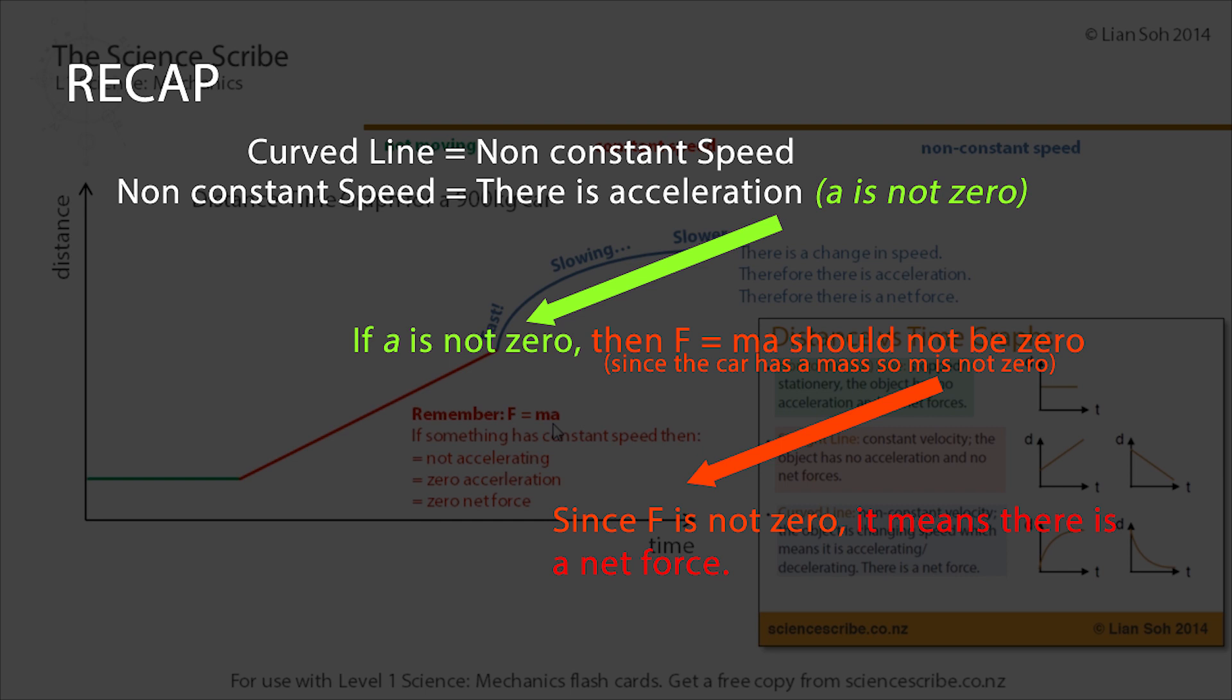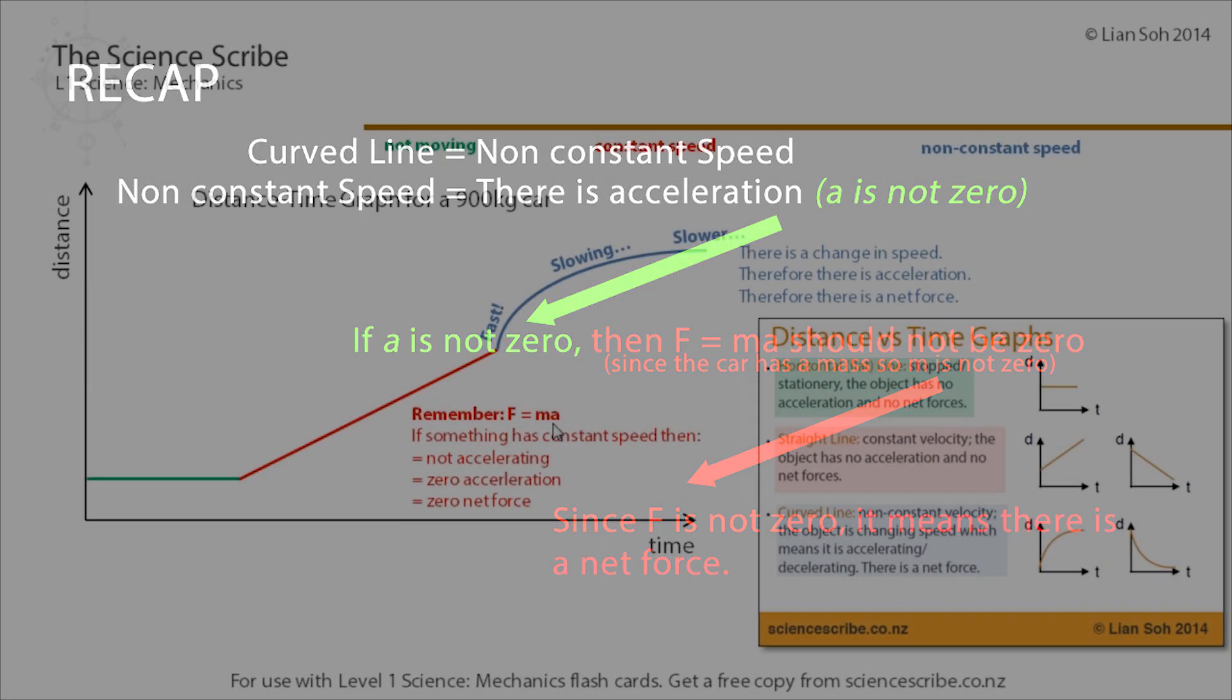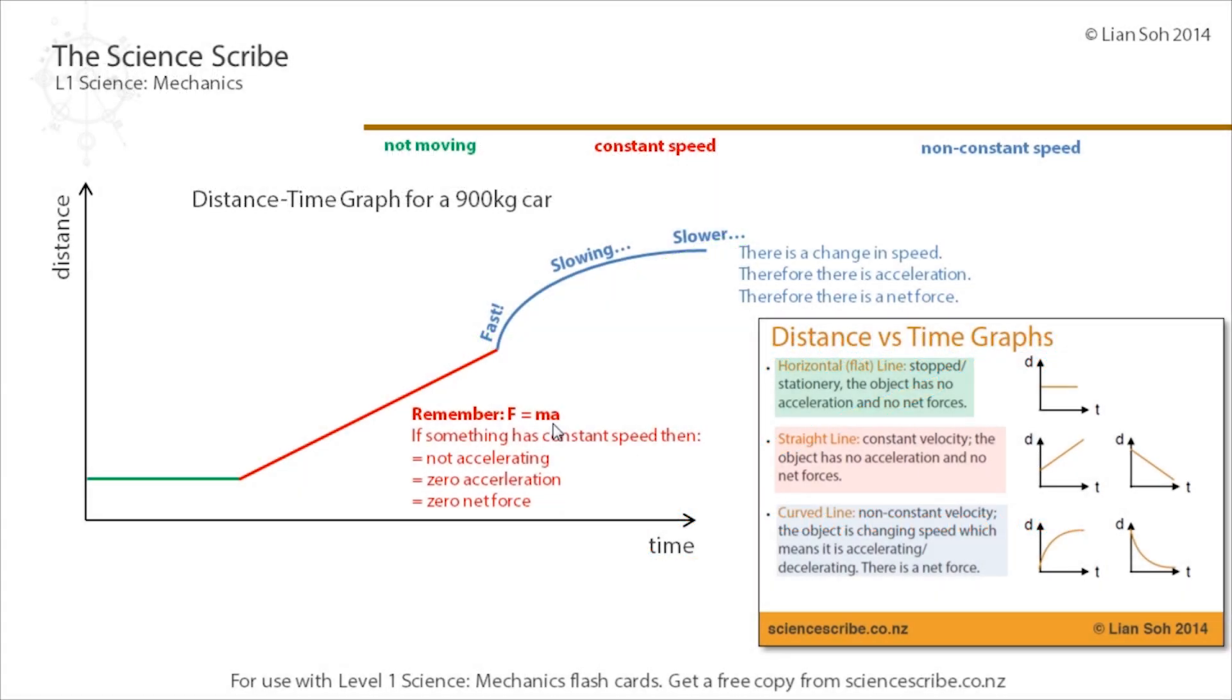And if there is an acceleration it must mean that there is a net force, because f equals ma. If I've got a 900 kilogram car for mass and I have an acceleration, it means the value for a isn't going to be zero, which means that 900 times whatever number that's not zero will give a non-zero value for f, which means there must be a net force.